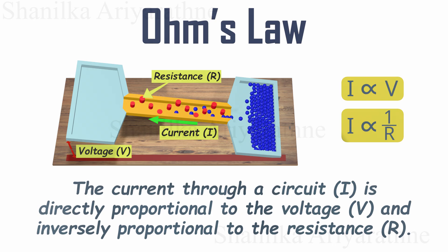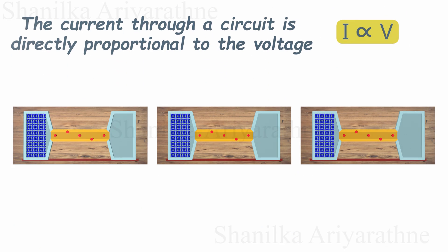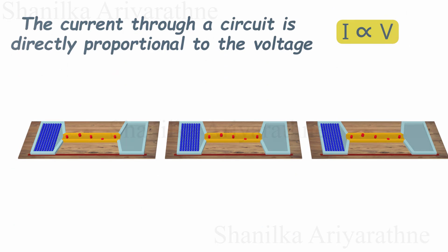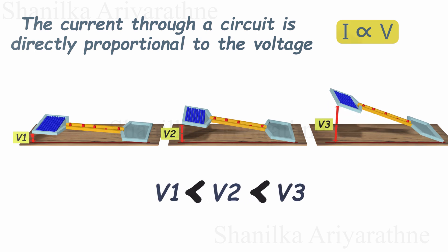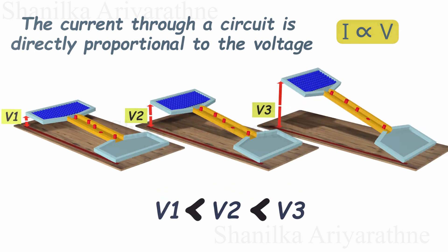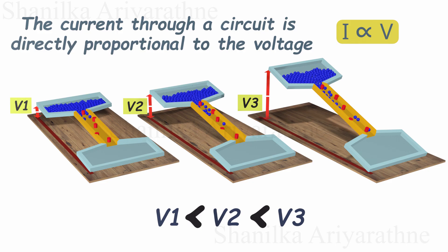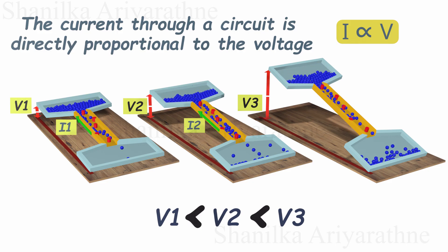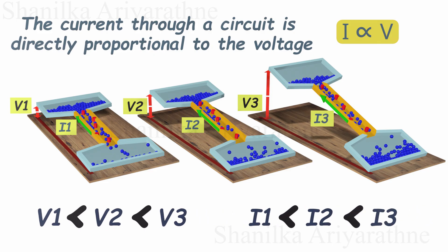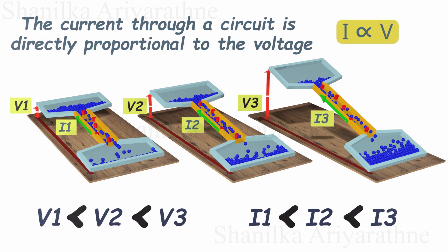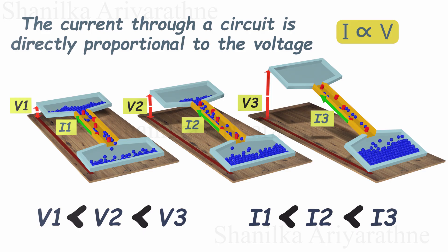Let's illustrate this. The current is directly proportional to the voltage. Here the voltage is increasing from V1 to V3 — let's see what happens to the current. It's clear the current is also increasing from I1 to I3. If we increase the voltage, electrons move faster, resulting in a higher current. If we decrease the voltage, electrons move slower, resulting in a lower current.